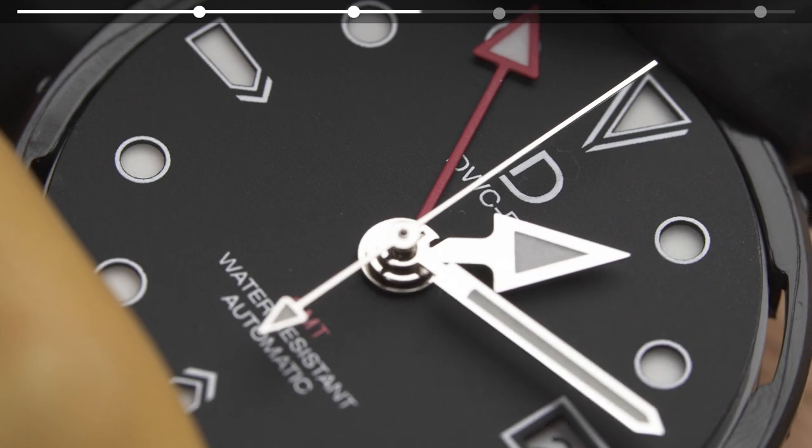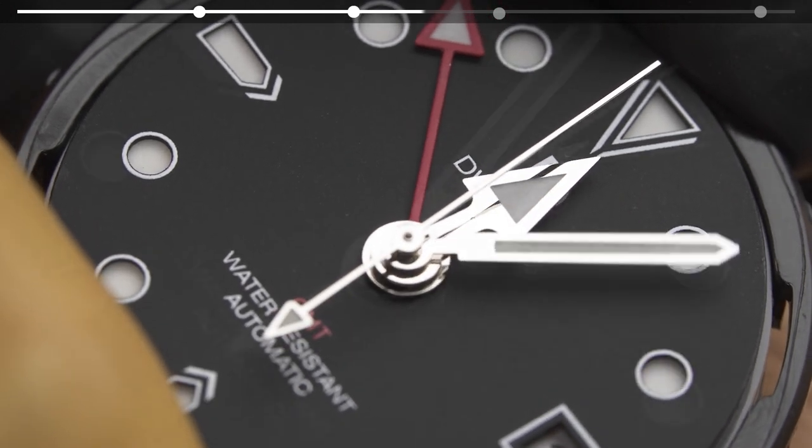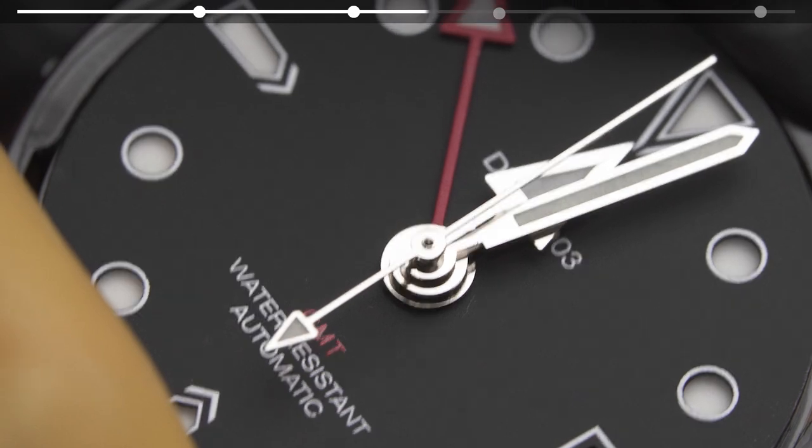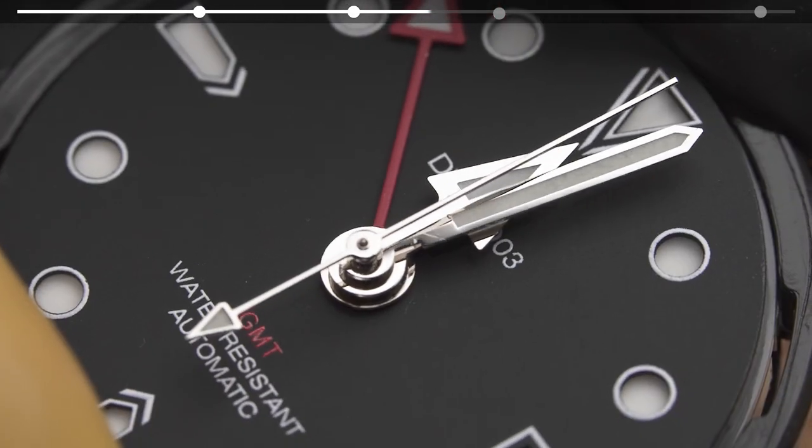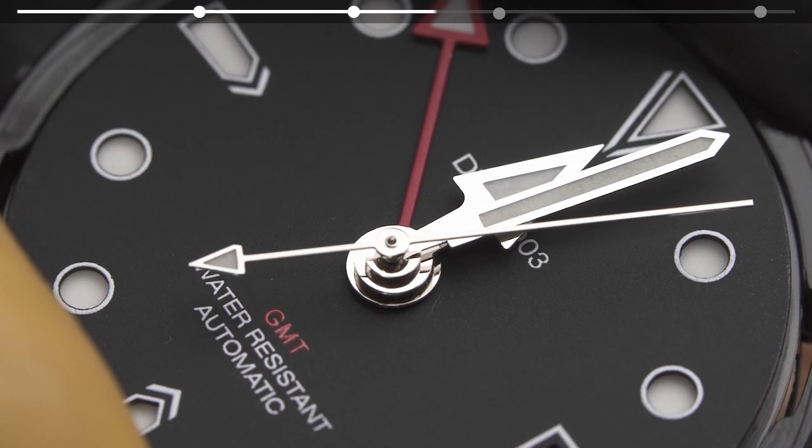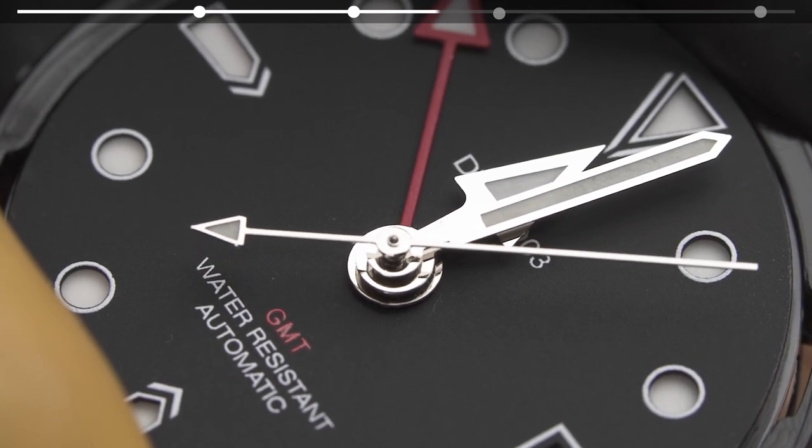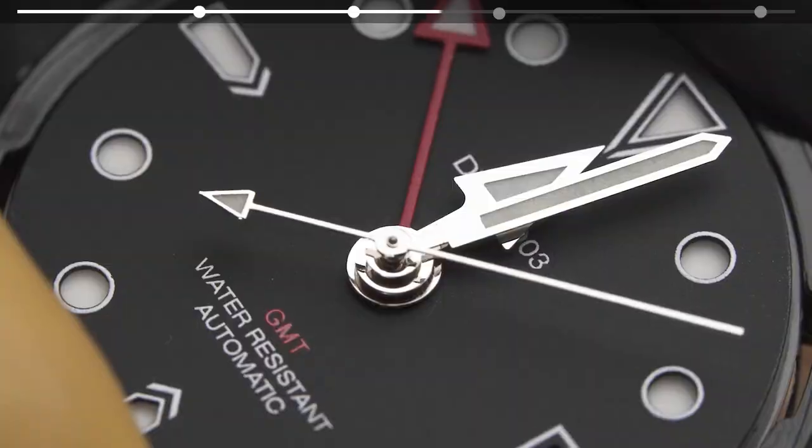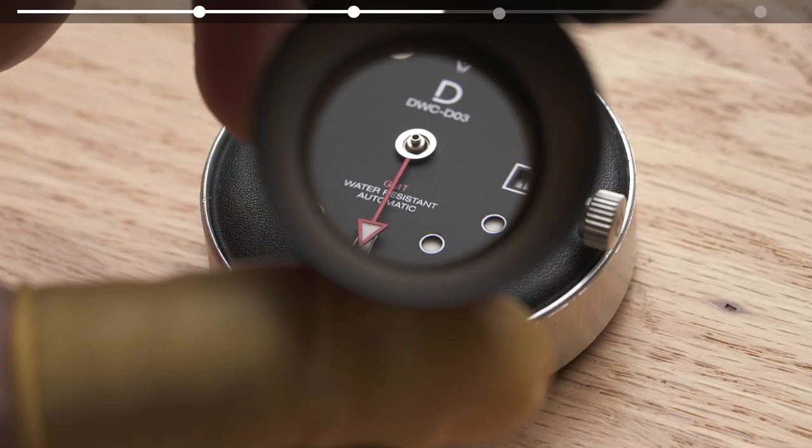Generally, we try to set all hands as low as possible without touching any components below, as that will leave us with more space for components above. Setting your GMT hand too high will force you to set the hour, minute and second hands higher, which may result in your second hand getting caught by the crystal.